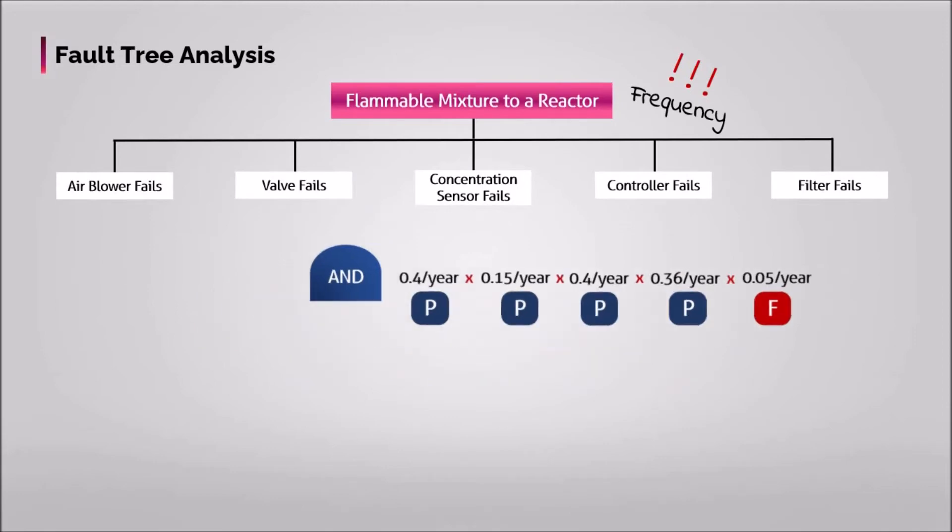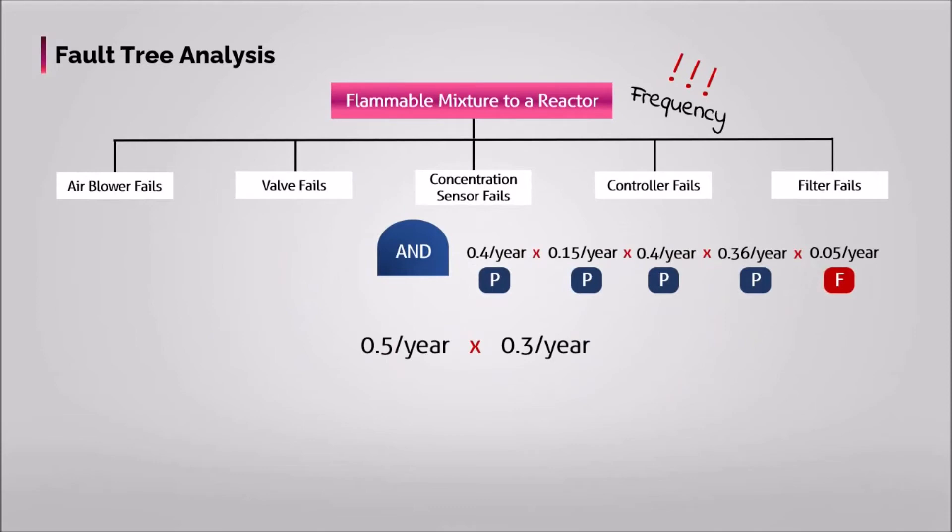Because, think in a mathematical way. If you multiply two frequencies of 0.5 and 0.3 per year, then your result will be 0.15 per year squared, but it doesn't provide the correct data, right?